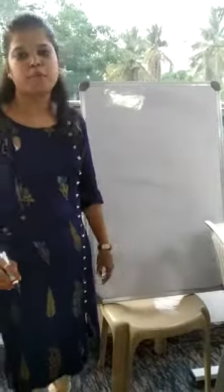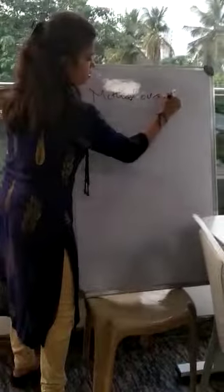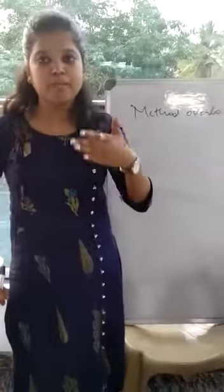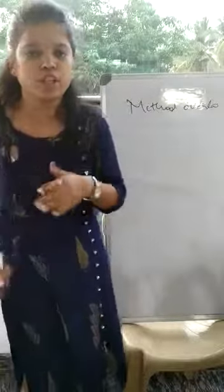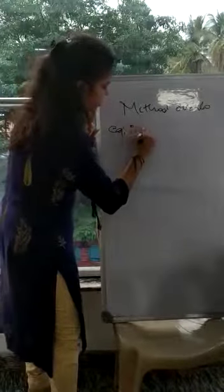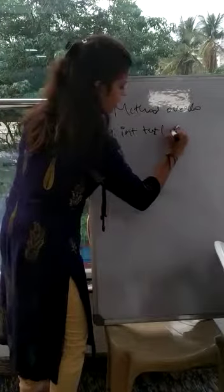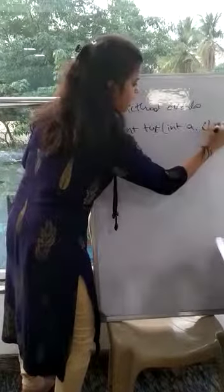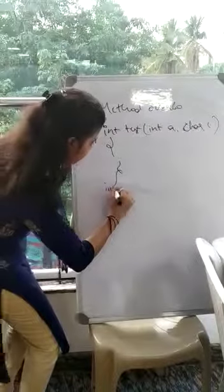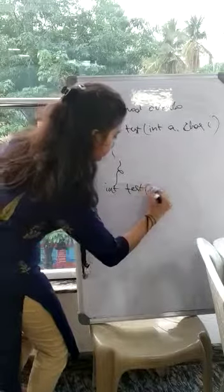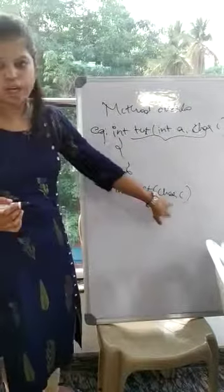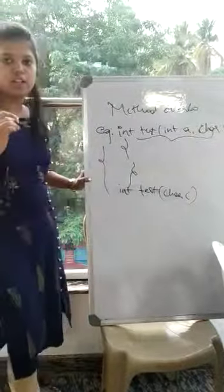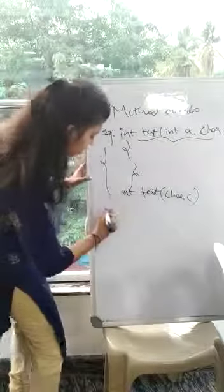Good evening everyone. I am going to explain a little bit about what method overloading is — passing the same method name but with different formal arguments or different types of formal arguments. For example, here we are having two formal arguments, and here we are having one argument, and so we are achieving method overloading.